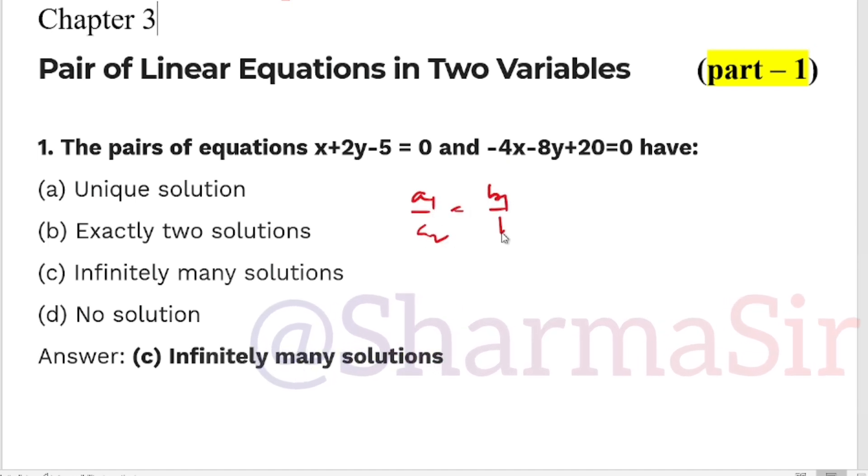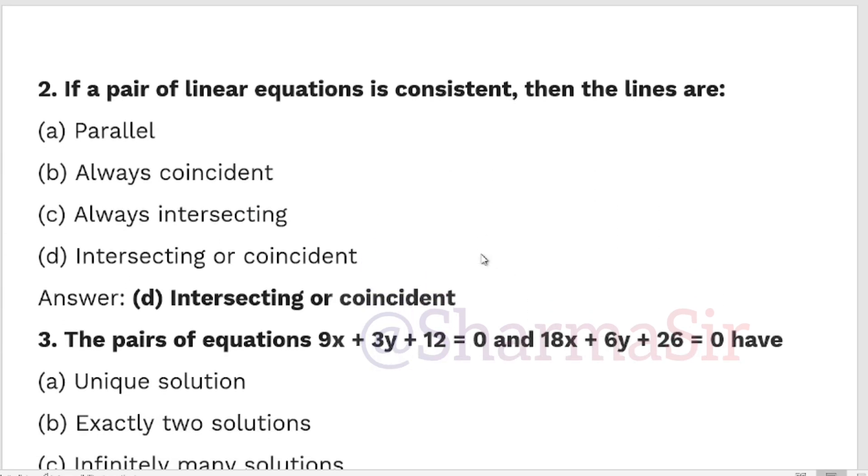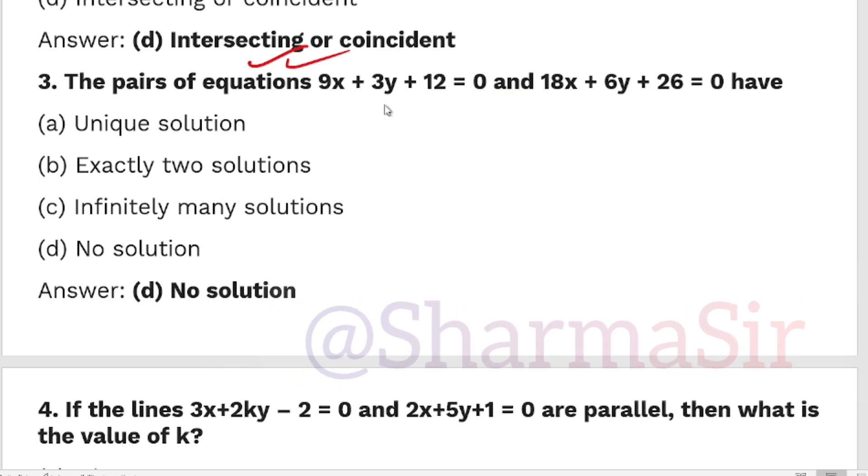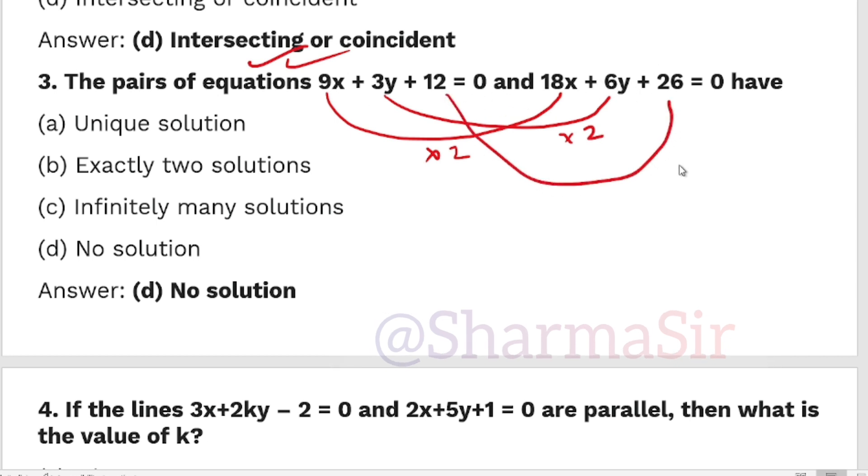Next question. If a pair of linear equations is consistent, then the lines are: consistent means the solution exists, either one or more than one solution. So our answer is the lines are either intersecting or coincident. Solution means the lines intersect at a point, or the lines are coincident which gives infinitely many solutions.